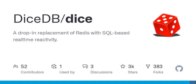Unit tests and integration tests are available to validate the functionality of DiceDB. Execute individual unit tests by specifying the test function name with the TEST_FUNC environment variable. Running all unit tests can be done with the make unit test command.